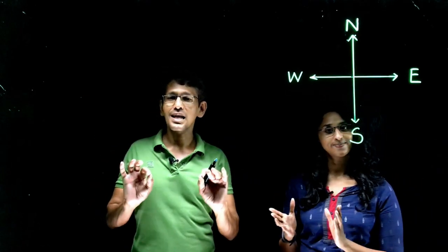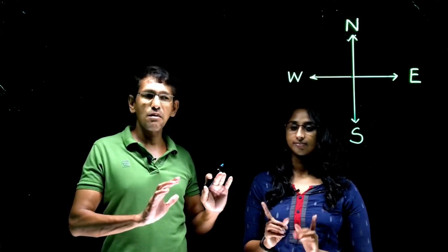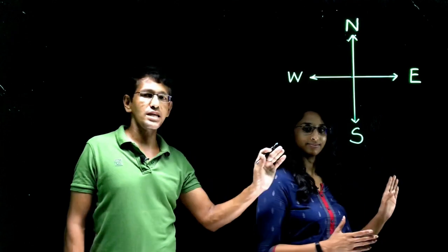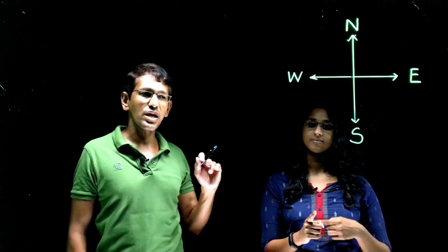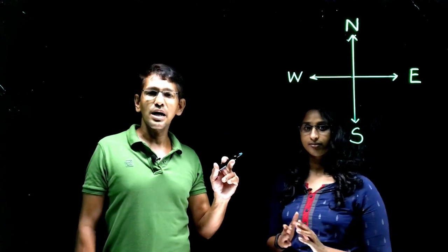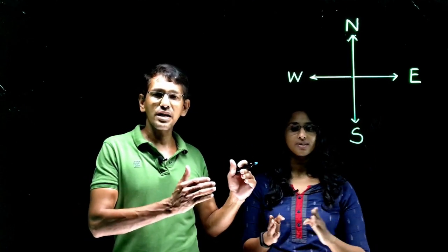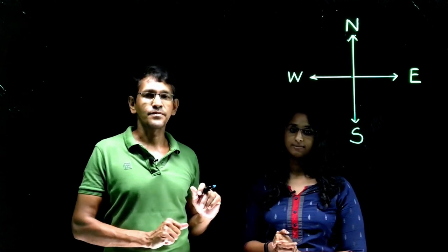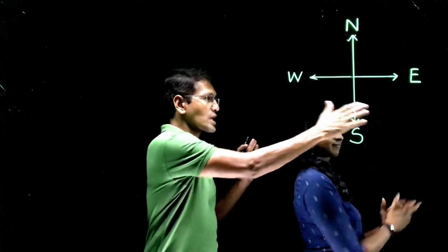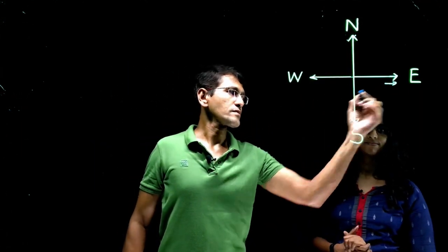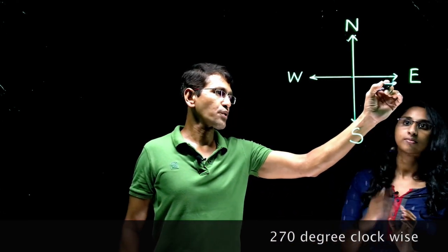So this is what the basic requirement is for directions and types of questions. Now we'll take an example. Shilpa is facing East. From that direction she turns 270 degrees clockwise, followed by a left turn, which is then followed by a 45-degree turn in the anti-clockwise direction. Let's look at what exactly happens here.